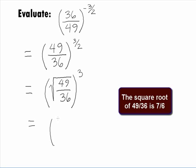Taking the square root of 49 over 36, we are left with 7 over 6 raised to the 3rd power.